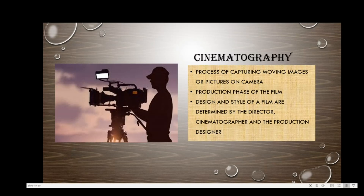Technically, cinematography is the art and science of recording light either electronically onto an image sensor, or chemically onto film. So both technology and science are involved. Apart from the technical aspects, cinematography is fundamentally the art of making motion pictures by capturing a story visually — it is the process of capturing moving images on camera.